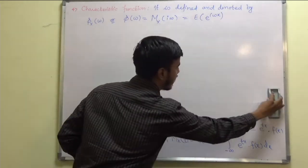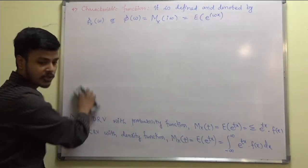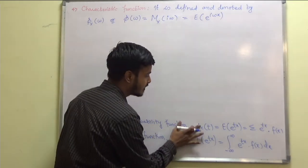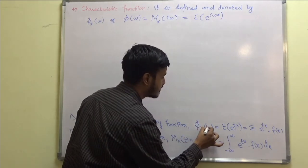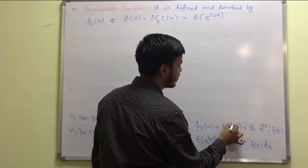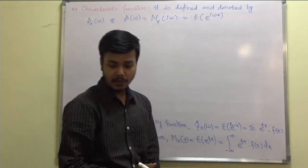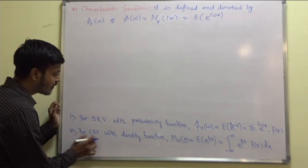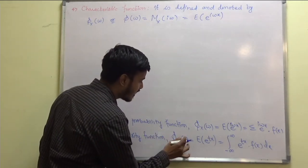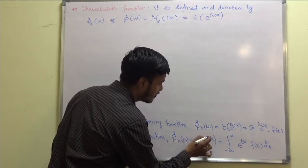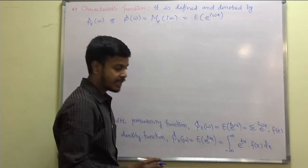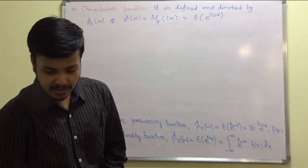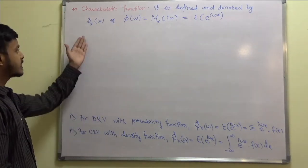Just as with the MGF, we can define the characteristic function for specific cases. For a discrete random variable with probability function f(x), phi_x(omega) equals summation of e^(i omega x) times f(x). For a continuous random variable with density function, phi_x(omega) equals the integral from minus infinity to infinity of e^(i omega x) times f(x) dx.